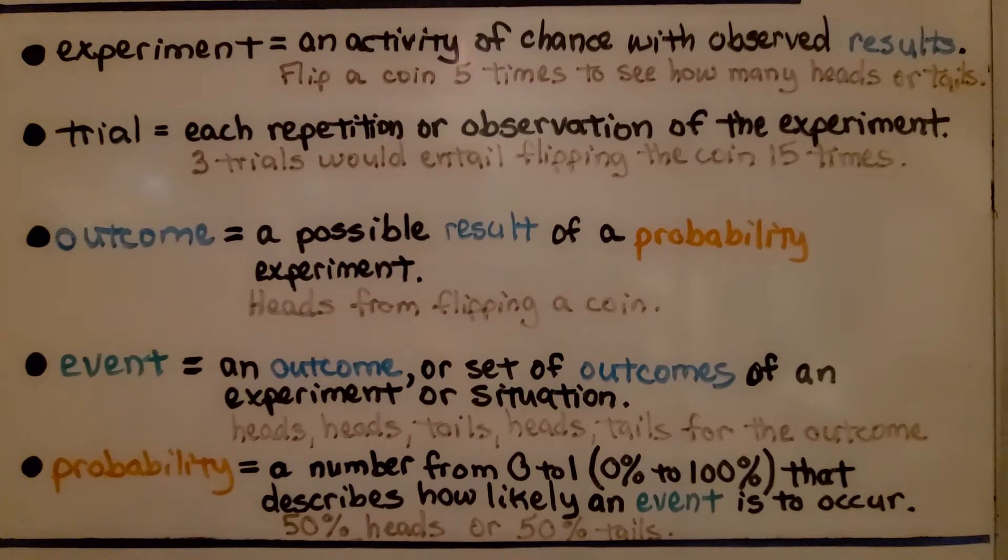The probability is a number from zero to one, which is 0% to 100%, that describes how likely an event is to occur. How likely are we to get heads or tails? Well, a coin only has two sides. One side is heads and one side is tails. So we have a 50% chance of getting heads or 50% chance of getting tails. It's equally likely as unlikely that we'll get either one.